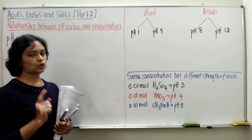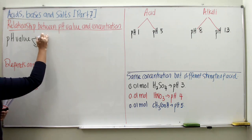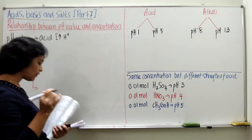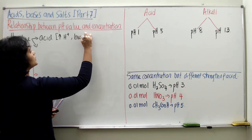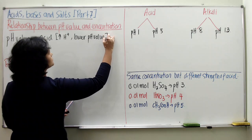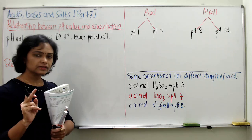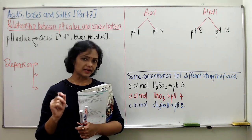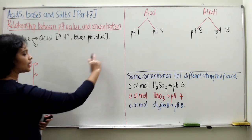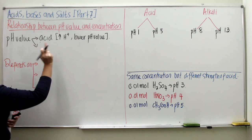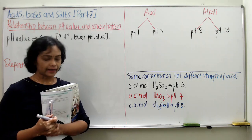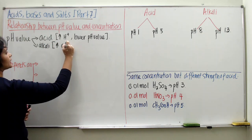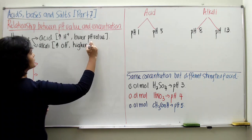pH value depends on 2 factors for acid and alkali. For acid: higher the amount or concentration of hydrogen ion, lower the pH value. For alkalis, pH value is determined by: higher the amount of hydroxide ion, higher the pH value.